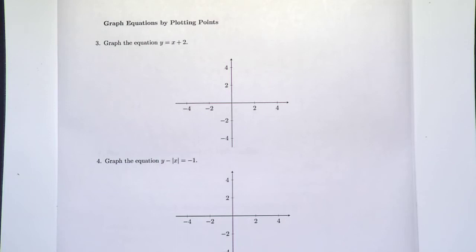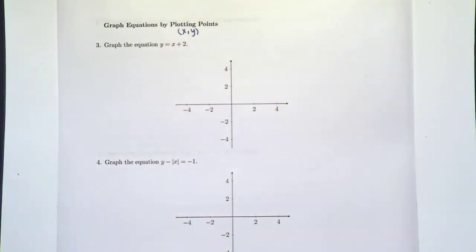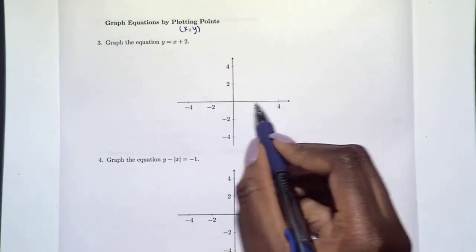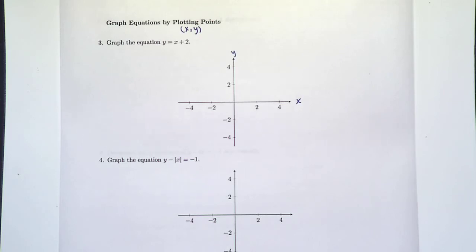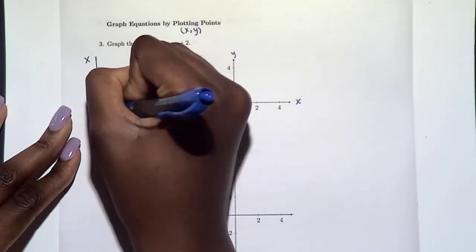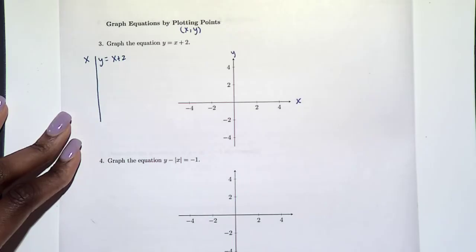This is part two of the 1.1 pre-class video and worksheet. In this section we're going to talk about plotting equations on a graph by plotting points first. When we're plotting on a graph we always want to use coordinates x and y, where x is horizontal and y is vertical. We can rewrite this equation using x and y only by using an x-y table, where y is our equation x plus 2.